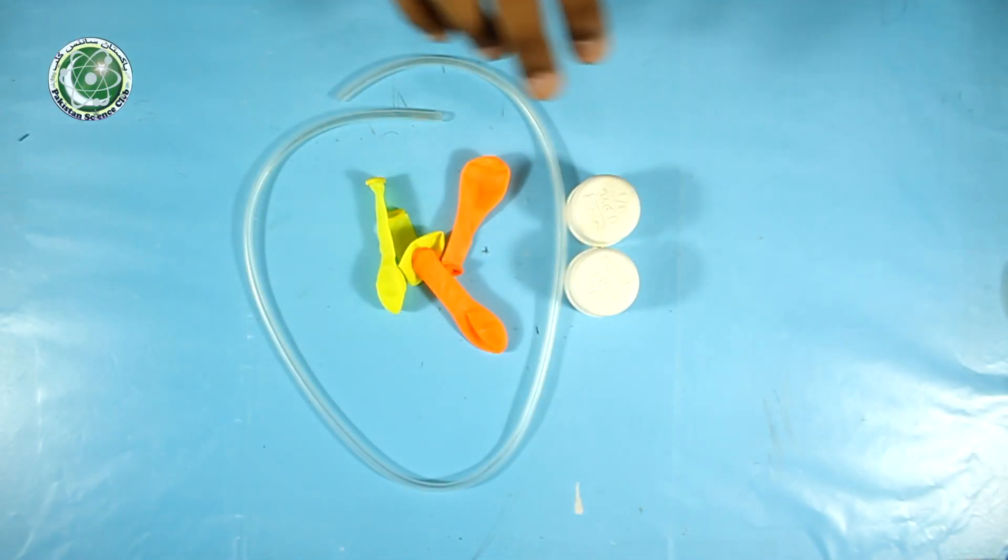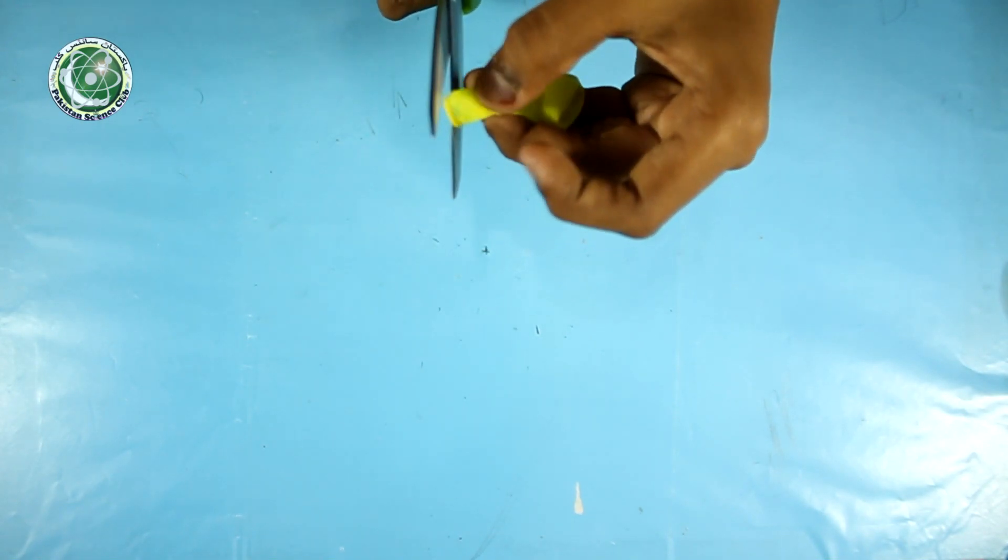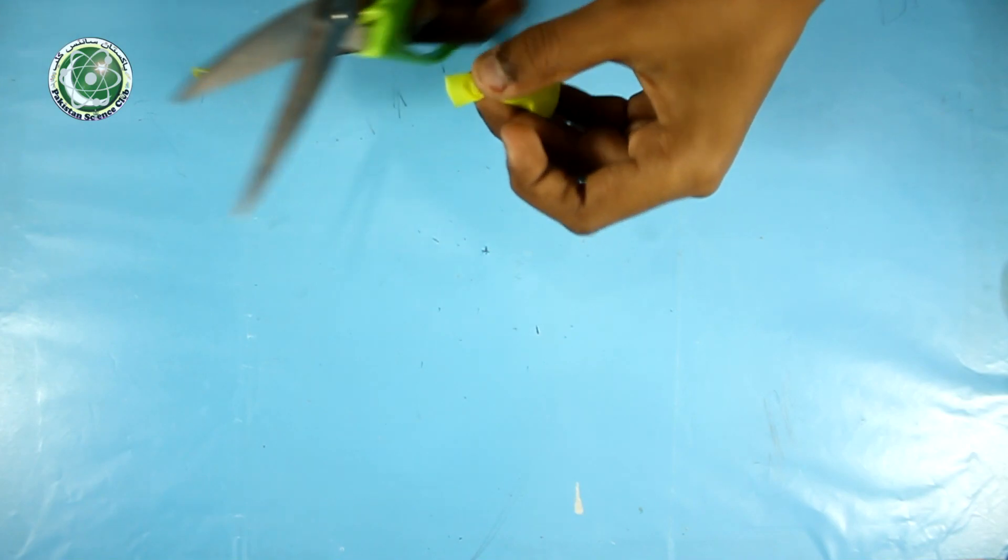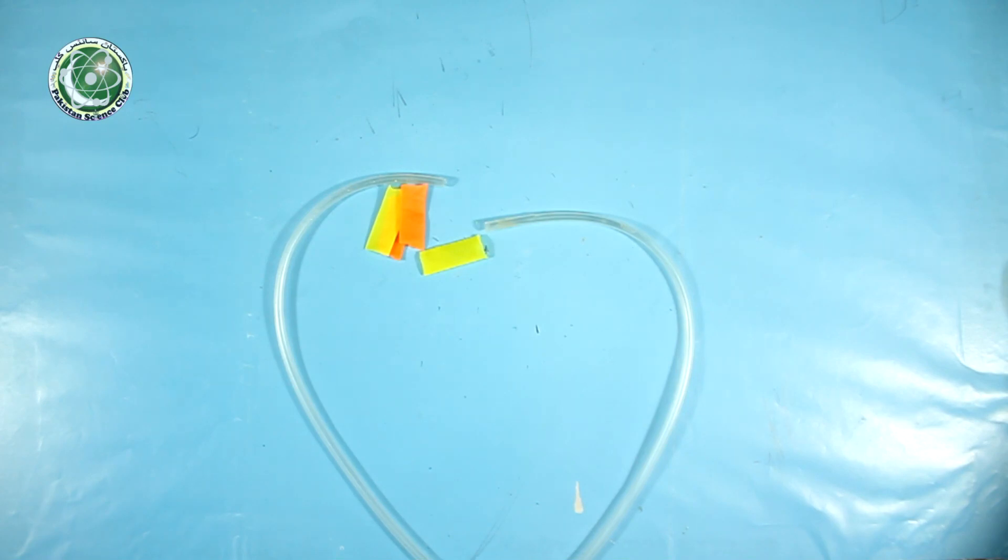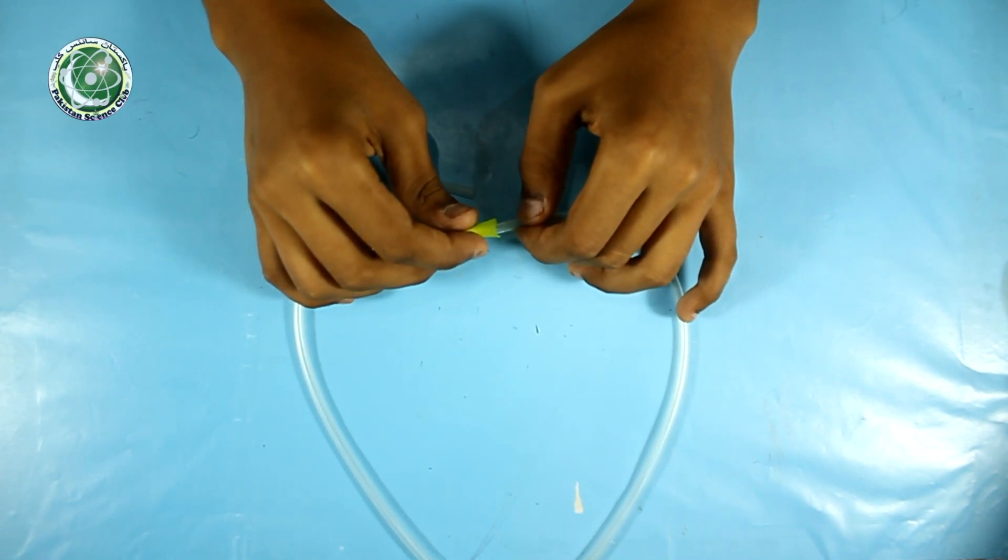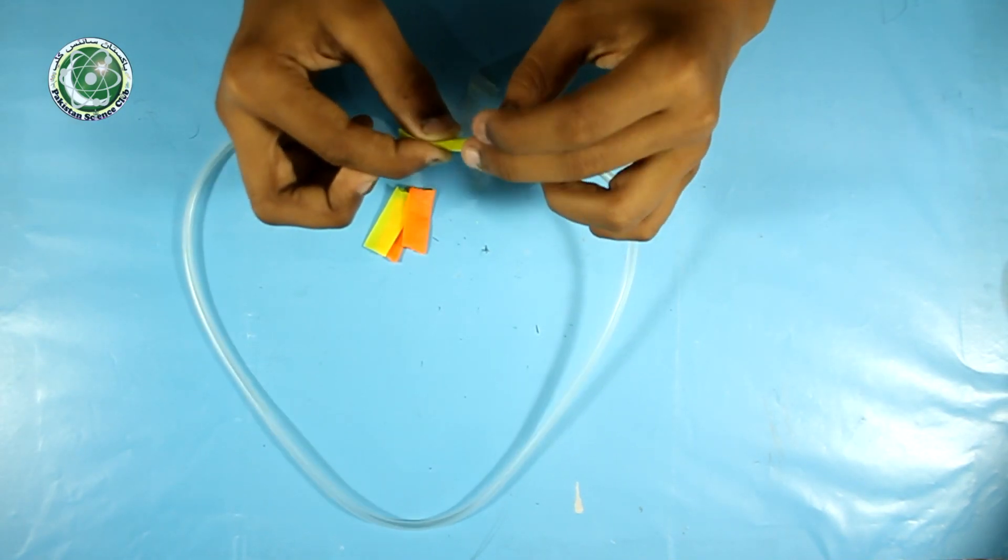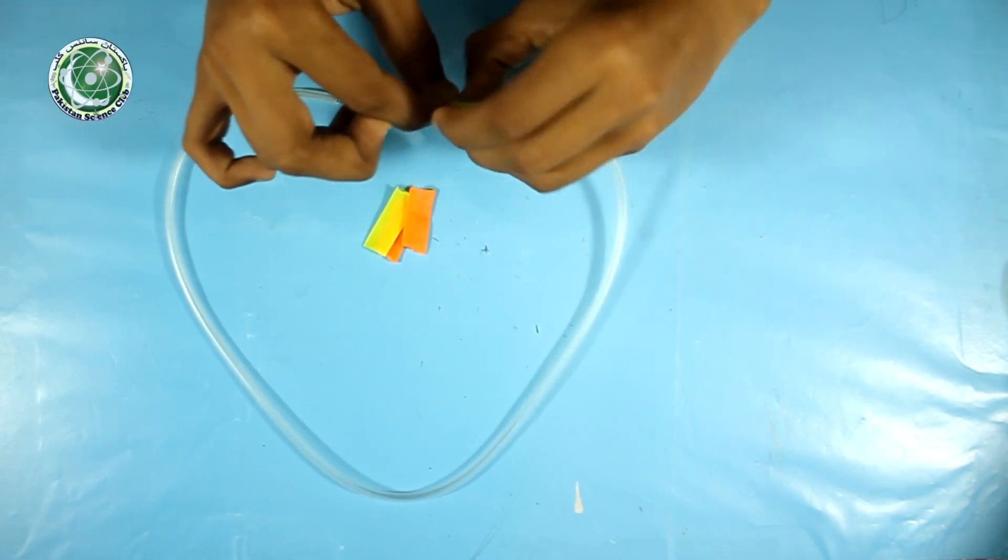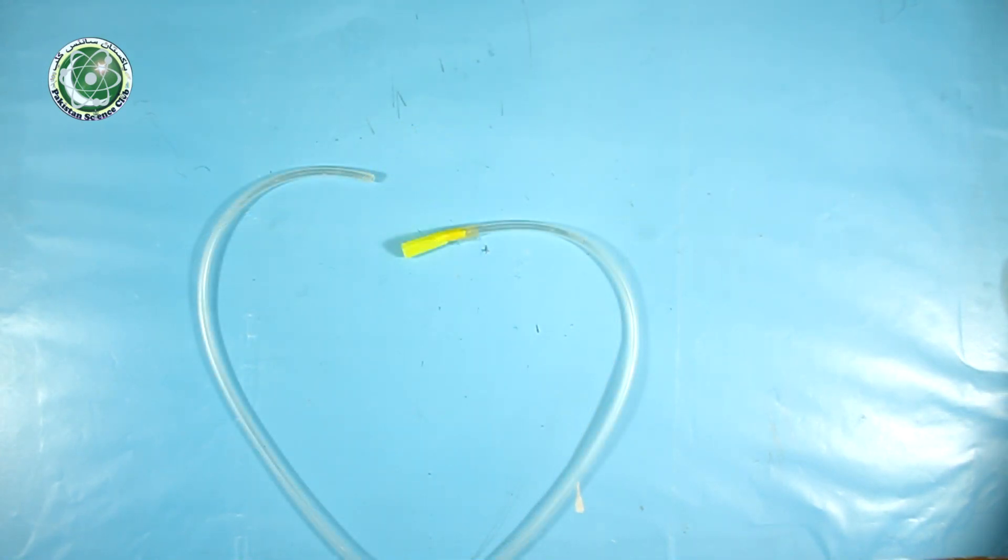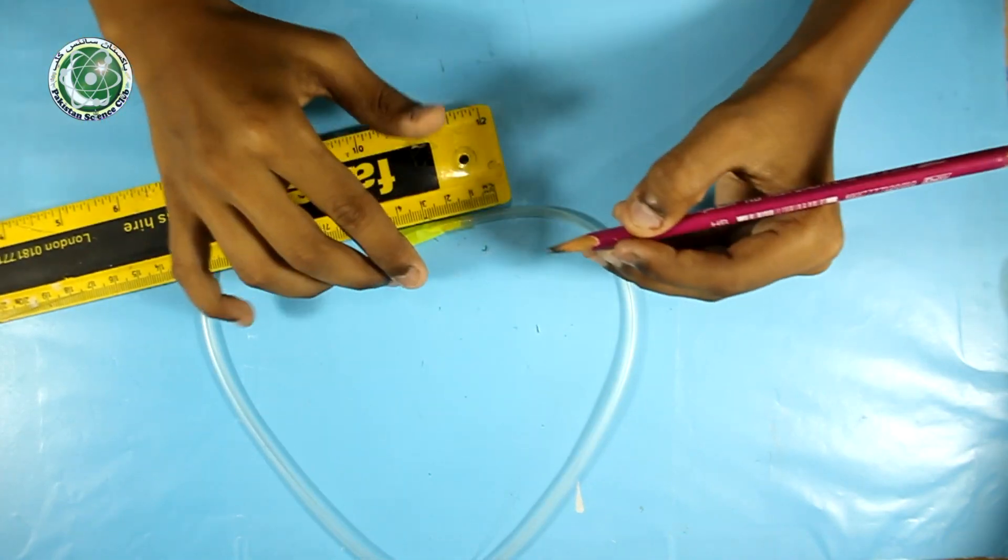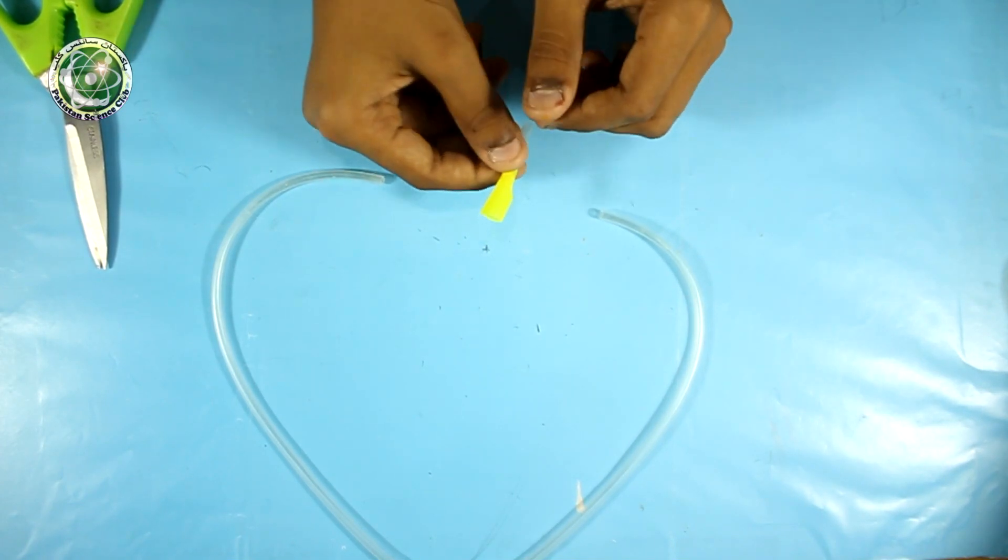First I will take PVC caps, drip pipe, and small balloons. Then I will take the balloon, cut the collar then cut the neck. We will only use the neck of the balloon. Then I will take the balloon and drip pipe and fix them with the help of tape. Now I will cut the drip pipe at 3 cm. We will make three more of them.